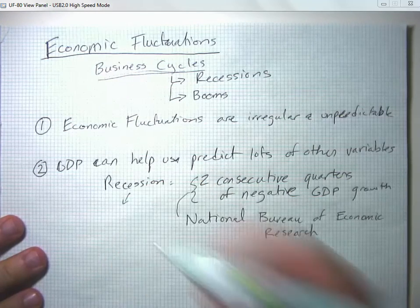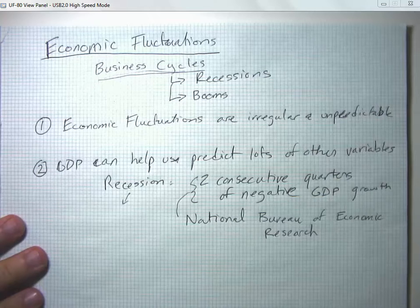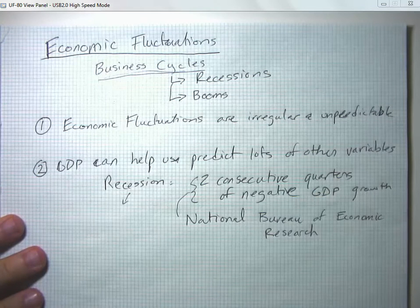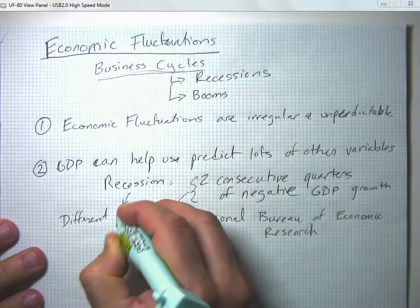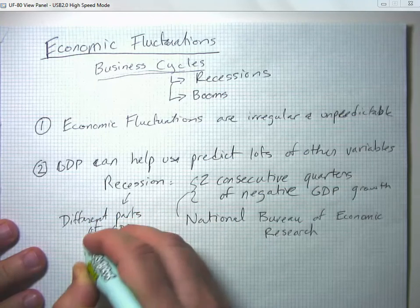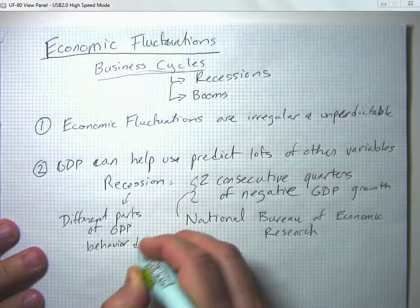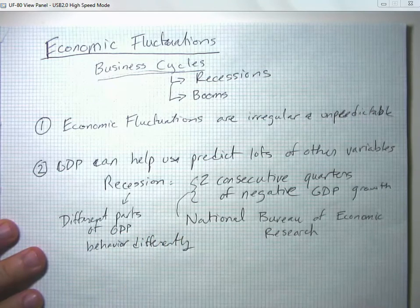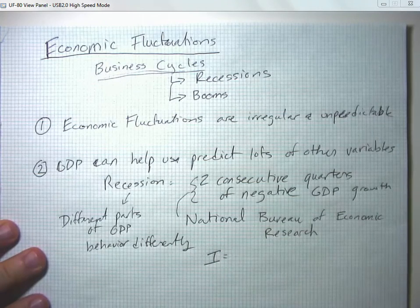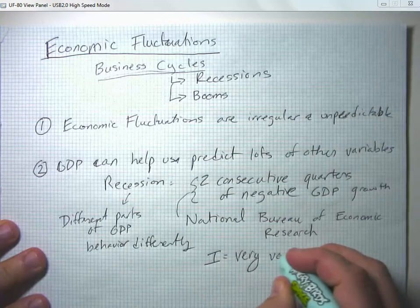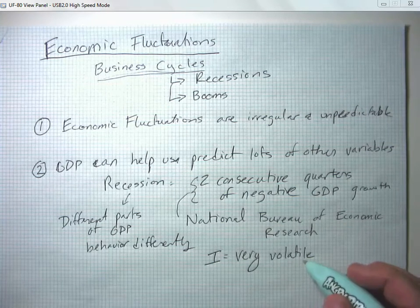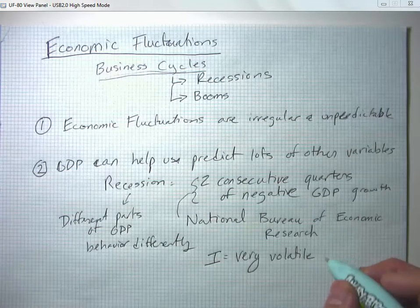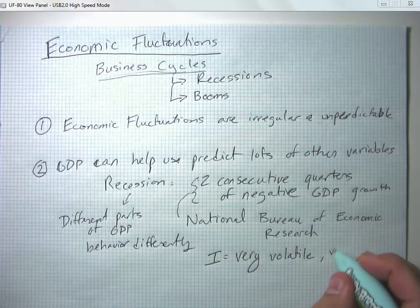More generally, a recession means the economy is slowing down and things are getting worse. Different parts of GDP behave very differently. Investment spending (big I) is very volatile — when GDP is rising, investment spending rises by a lot, and when GDP is going down, investment spending declines by a lot. Businesses and household purchases of houses are very sensitive to the state of the economy.